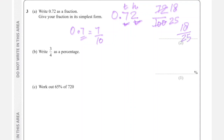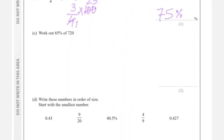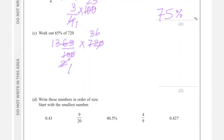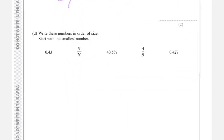Write three-quarters as a percentage: multiply the fraction by 100. Simplify — 4 times 25 is 100, and 3 times 25 is 75, so the answer is 75%. Then work out 65% of 720. Write 65% as 65 over 100, multiply by 720; cancel the zeros, simplify by 5: 13 times 36 equals 468.